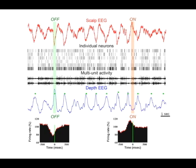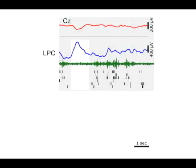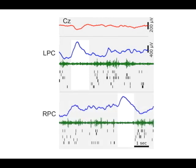But do neurons in different brain regions tend to turn on and off together, or separately? Here is our main novel finding, an example of regional slow waves. A slow wave occurs in the left posterior cingulate cortex — the neurons stop firing, while the depth EEG, in blue, shows a positive peak. A few seconds later, the right posterior cingulate falls into silence, while the other region remains highly active.